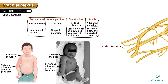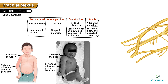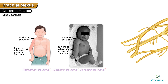The radial nerve has a root value of C5 to T1. In Erb's paralysis, some fibers entering the radial nerve are affected — these generally supply the brachioradialis muscle. The overall clinical picture of Erb's paralysis is: adducted shoulder (loss of deltoid), extended elbow and pronated forearm (loss of biceps and brachialis). This posture is called the policeman's tip hand, waiter's tip hand, or porter's tip hand.